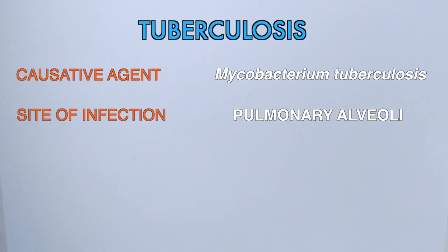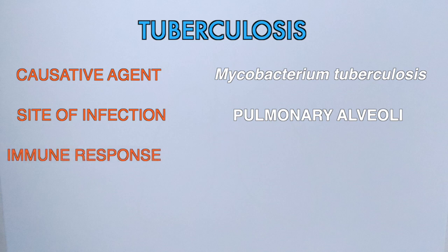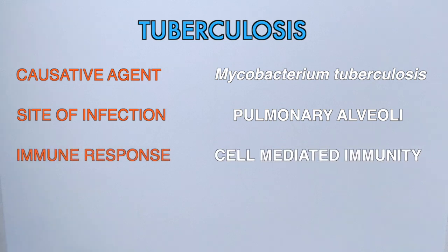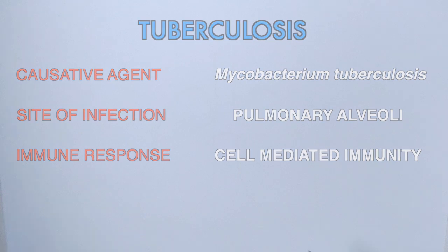Mycobacterium is a strict aerobic bacteria and needs oxygen for survival, which is the reason for its site of infection in the alveoli, where gas exchange takes place. In this infection, the immune response is in the form of cell-mediated immunity, which means antibodies are not involved in eradicating the pathogen. Rather, immune cells like macrophages and the chemicals secreted by them are involved in eliminating the pathogen.